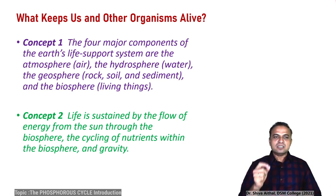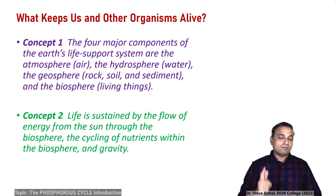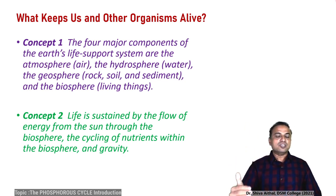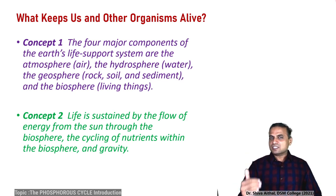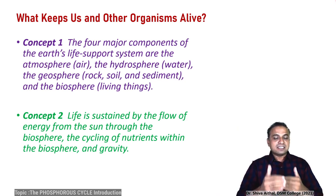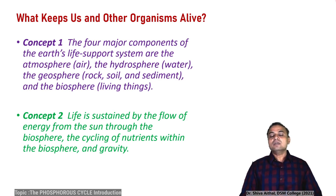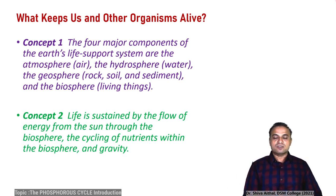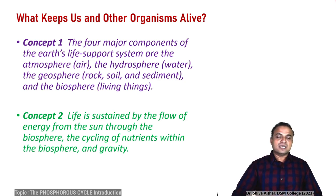The second concept is that life is sustained by the flow of energy from the sun. Photosynthesis is very important — from there only the carbonaceous compounds are formed. So life is sustained by the flow of photons, that is the sun's energy, through the biosphere, along with its cycling of nutrients within the biosphere and gravity. Gravity is what keeps us on the surface of the earth.